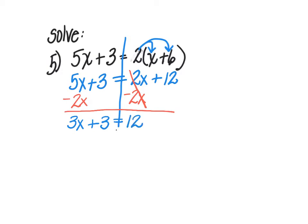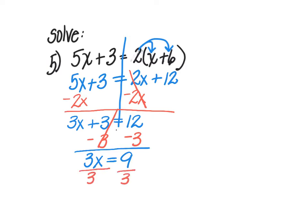Now it's time to move the constant away from the variable term to the opposite side. It's a positive 3, so to move it to the other side, I need to do a negative 3 — I'm going to subtract 3 from both sides. The 3's zero each other out on the left side, leaving me with 3x is equal to 9. That very last step is to divide by the coefficient of 3. 3 divided by 3 leaves me with 1x, and 9 divided by 3 is 3. So my solution is x is equal to 3.